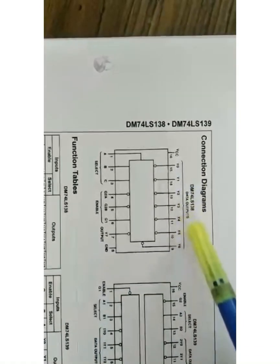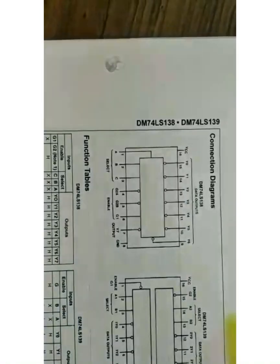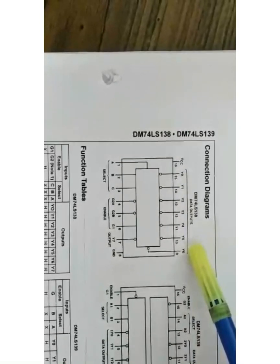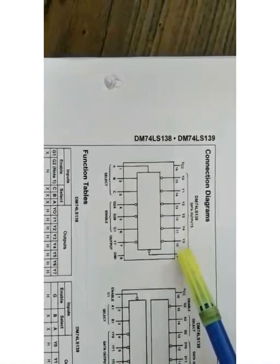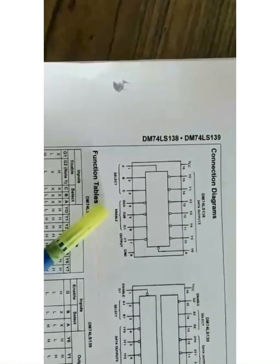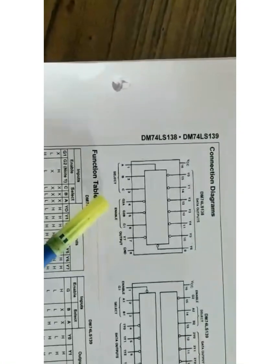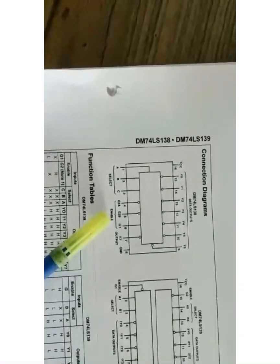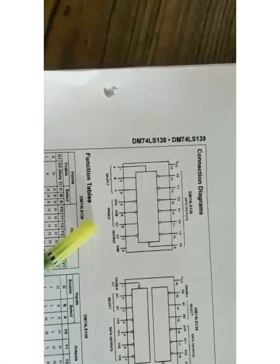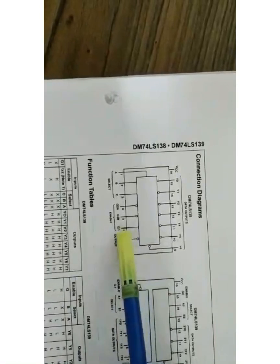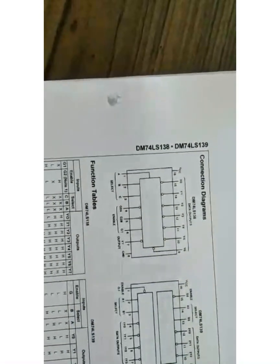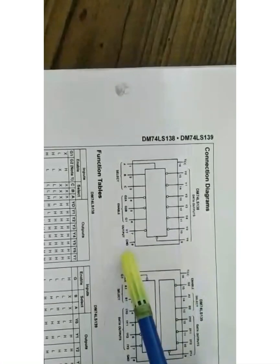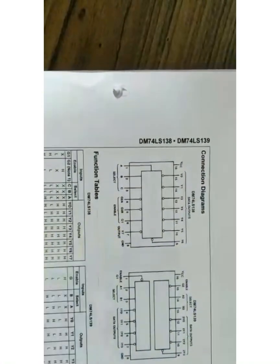The data outputs Y0, Y1, Y2, Y3, Y4, Y5, Y6, and Y7 are the output pins. You can observe that there are bubbles at these output points — those pins are called active low pins, meaning they are active only when connected to low. Similarly, pin number 4 and pin number 5 are active low enable pins and must be connected to ground. Pin number 6 is an active high enable pin and must be connected to VCC for the IC to work properly.